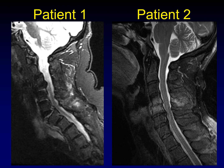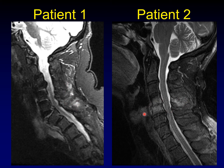Going back to the sagittal T2-weighted images, this is a classic traumatic ligamentous disruption. The anterior longitudinal ligament is disrupted. We've got a fracture line through the disc space, and we've got disruption of the posterior interspinous ligaments here.